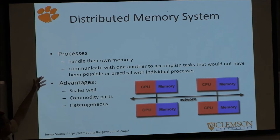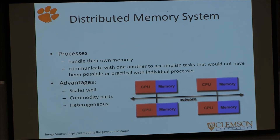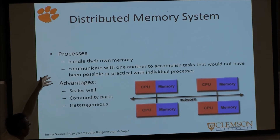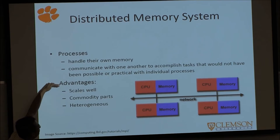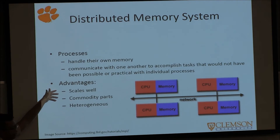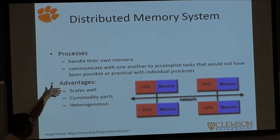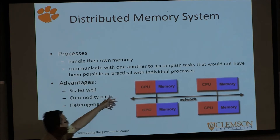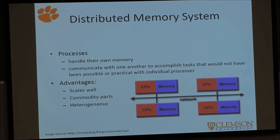Distributed memory systems are different from multi-threading — for example, Python has libraries to support multi-threading. The advantage of distributed memory systems is that they scale very well. If you want more cores on a single machine, you have to buy a new CPU, but for a distributed system you can just buy another computer and add it to the cluster. It can support commodity parts and computers of different types, and as long as they are on the network, they can contribute to the work.